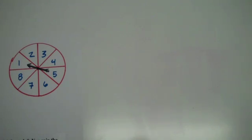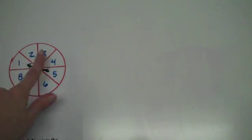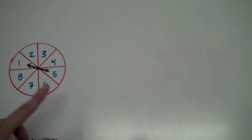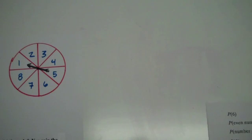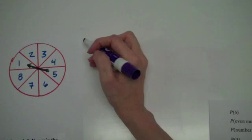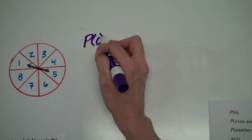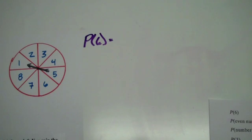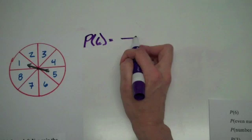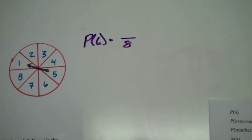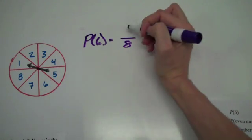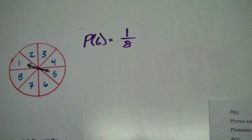Here's example two. Basically this example is that we have a spinner and it's labeled with eight numbers. We want to know the probability of a couple of things. On a spinner, typically all of the pie pieces — the parts of the spinner — are all equal, so you have an equally likely chance of landing on any of those numbers. The first one we want to do is the probability of getting a six. If we have a spinner with eight total parts, that's our total possible, and there's only one six. So you have a one out of eight chance of getting a six.